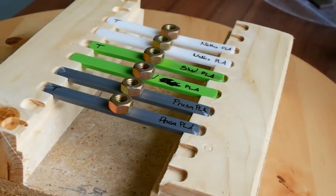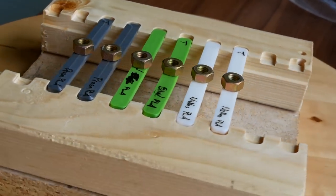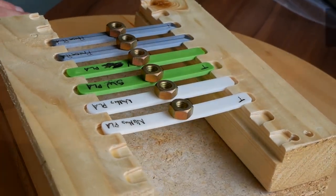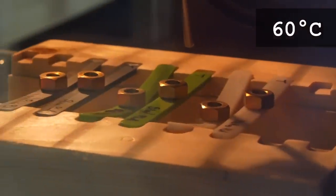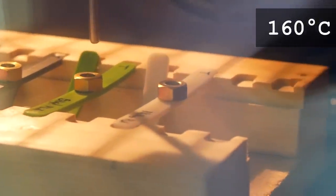I redid the test for 3 more PLA filaments from different manufacturers and with different colors. The results were very similar to the first test. The unannealed specimens softened at 60 degrees whereas the annealed ones did well until 170 degrees.